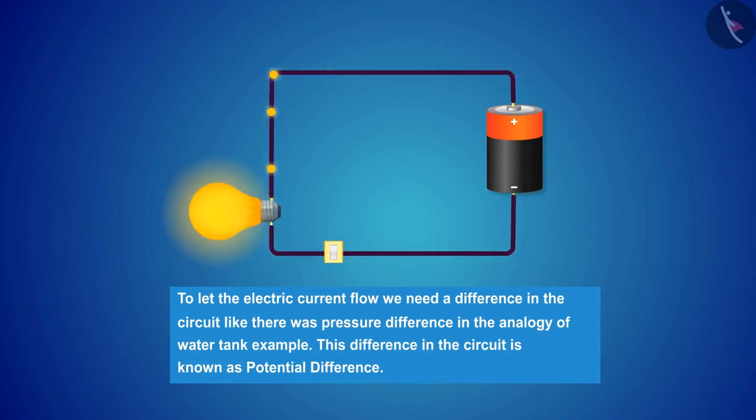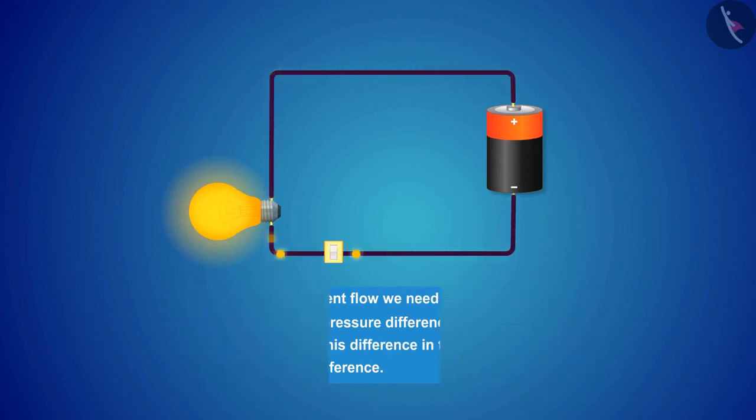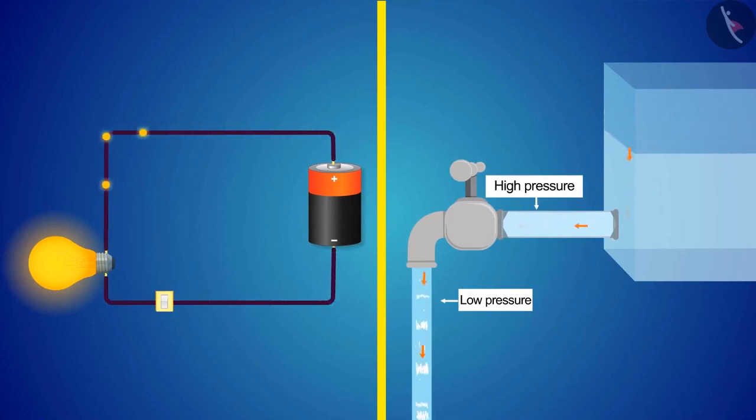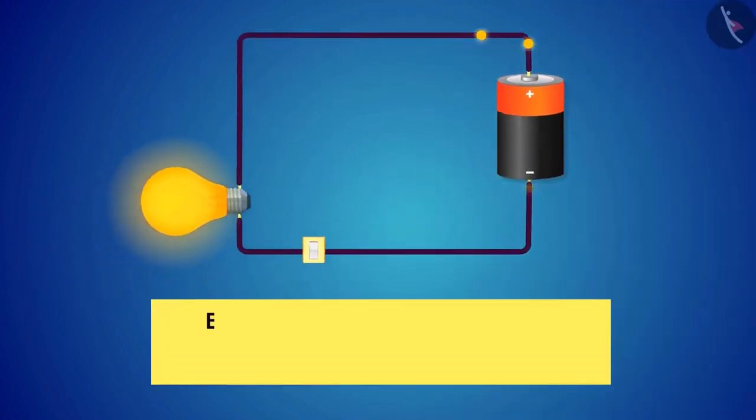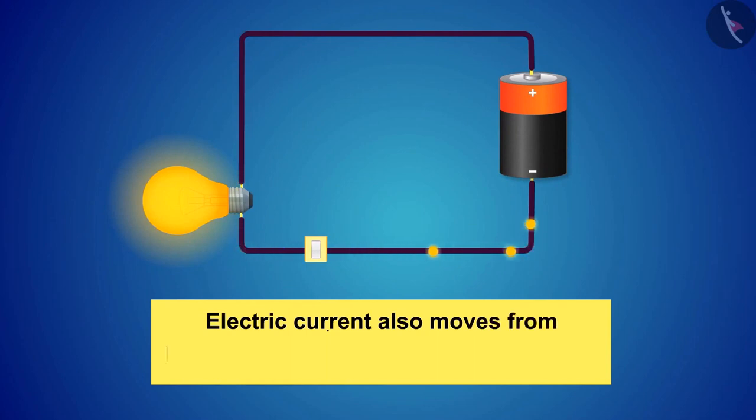This difference in the circuit is known as potential difference. Just as the water flows from high pressure to low pressure area, similarly electric current also moves from high potential area to low potential area.